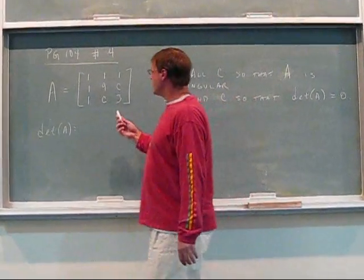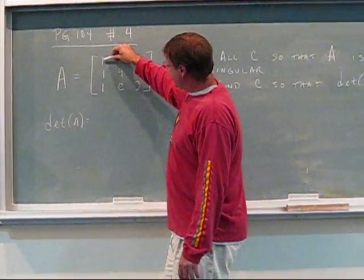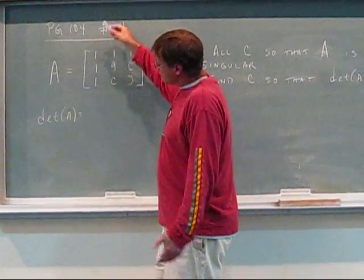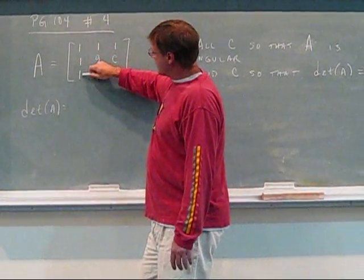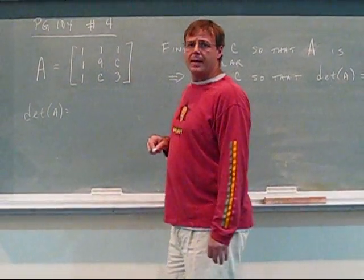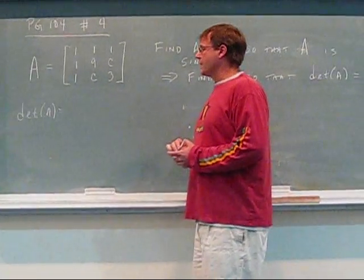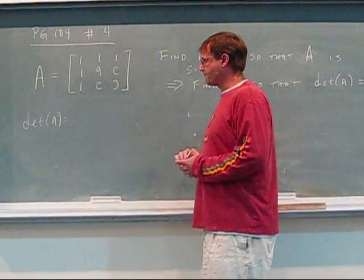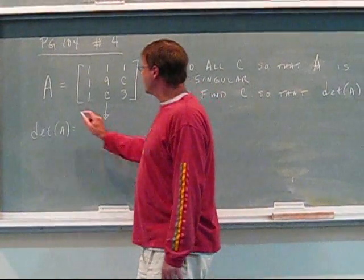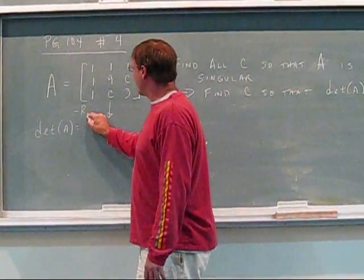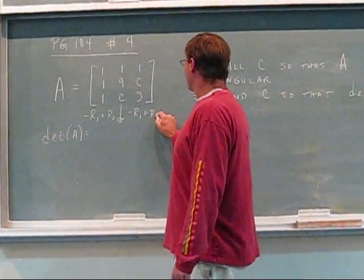What I want to do first is create a column of zeros. I'm going to make a column of zeros here, making this entry zero and this entry zero, which will make my computation of the determinant much more simple. To do that, I'm going to have to do two row operations: negative row one plus row two, and negative row one plus row three.